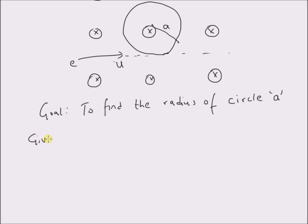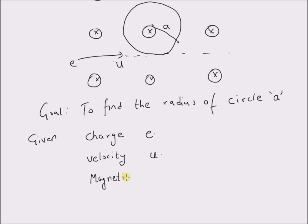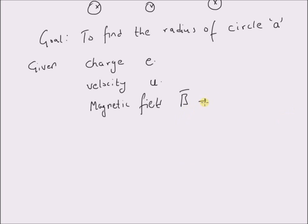The given information is: the charge of the particle is e, that is the charge of an electron; the magnitude of the velocity is given by u; and the magnetic field is given by B-bar with a magnitude equal to B.